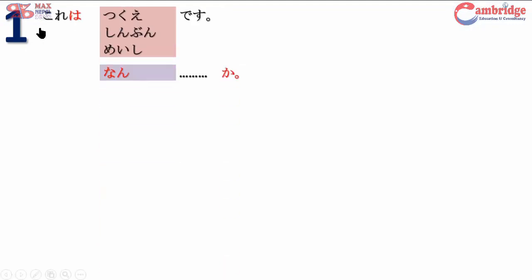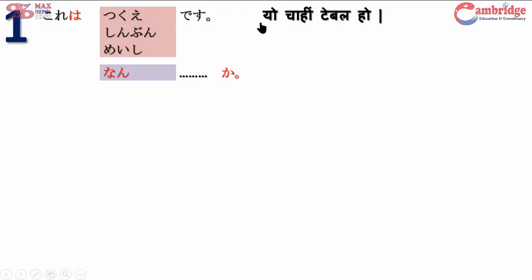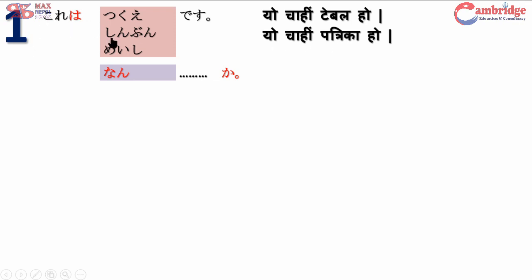In the grammar section, number one is 'kore wa ~ desu.' 'Kore' means 'this' and 'wa' is the topic particle. 'Kore wa tsukue desu' means 'this is a desk or table.' 'Kore wa meishi desu' means 'this is a business card or visiting card.'